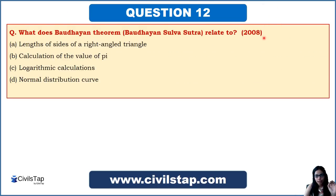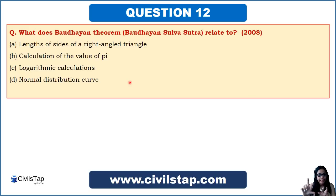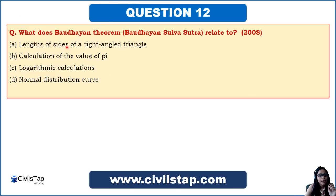This question came in the Prelims of 2008: 'What does the Baudhayana Theorem in the Sulva Sutra relate to?' Options: (A) lengths of sides of a right-angled triangle, (B) calculation of the value of pi, (C) logarithmic calculations, (D) normal distribution curve. The Baudhayana Theorem states that the square of the hypotenuse equals the sum of the squares of the other two sides — this is essentially the Pythagorean theorem. So the Baudhayana Theorem is about the lengths of sides of a right-angled triangle — the answer is option A.